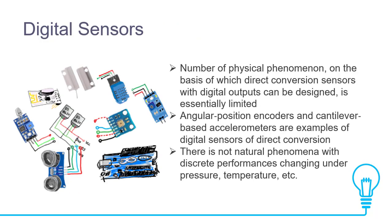We will see digital sensors which we are currently using in many IoT projects. The number of physical phenomena on the basis of which direct-conversion sensors with digital outputs can be designed is essentially limited. Angular position encoders and cantilever-based accelerometers are examples of digital sensors of direct conversion. There are non-natural phenomena with discrete performance changing under pressure, temperature, etc.